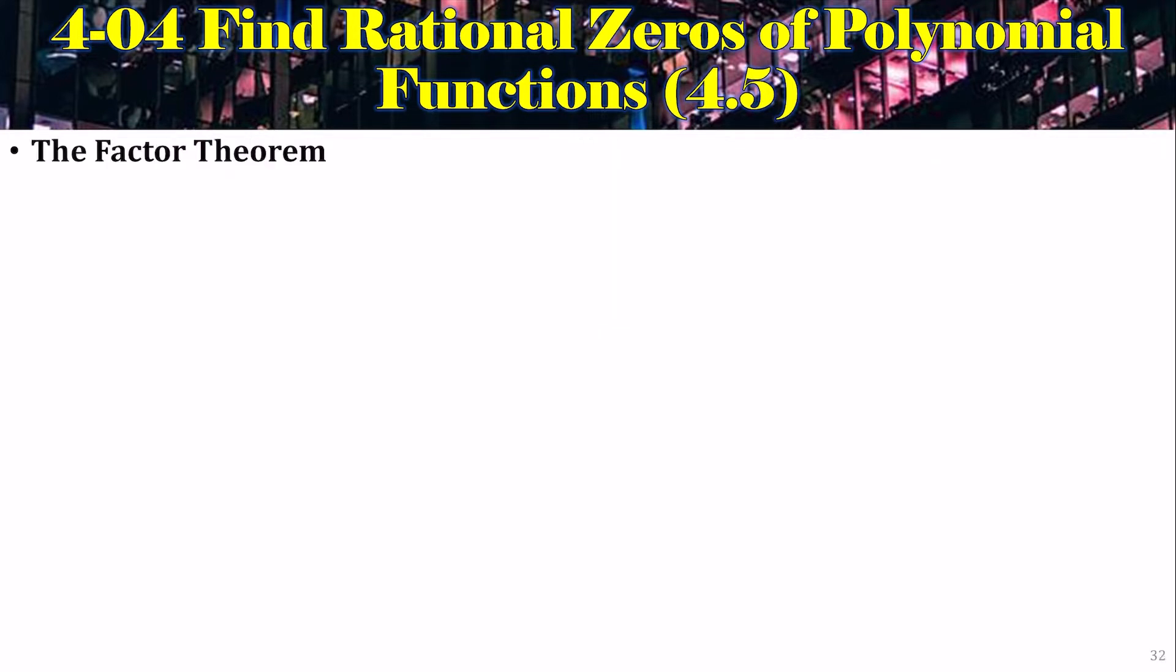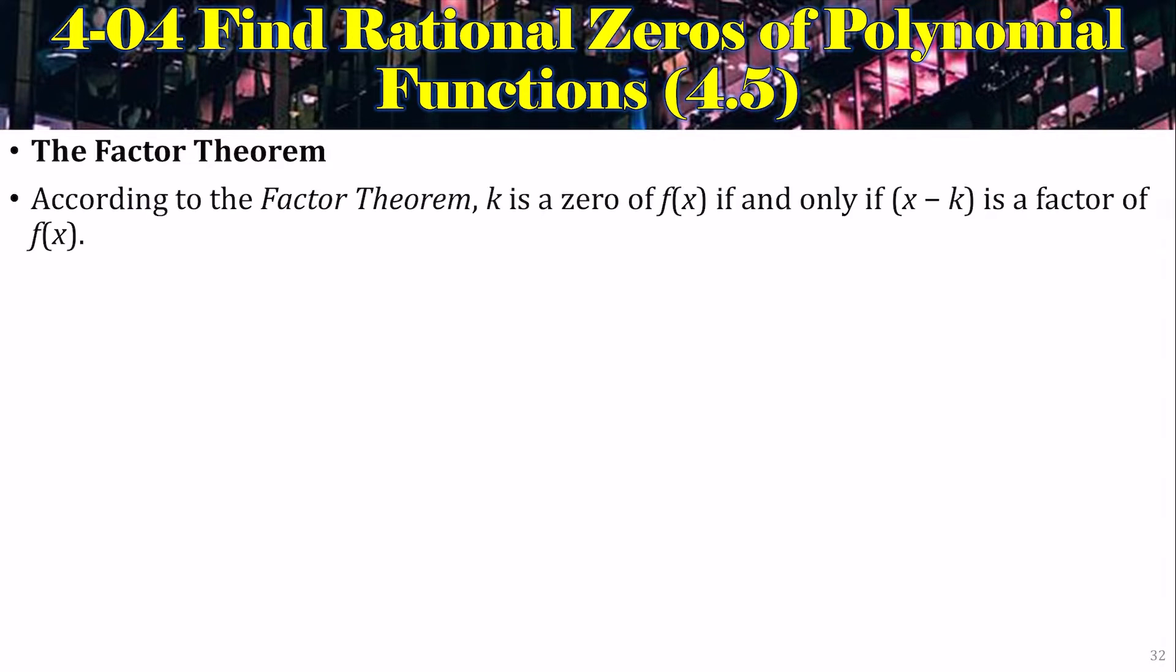We also get the factor theorem, which is kind of just the definition of a factor. It says k is a 0 of f of x, if and only if, x minus k is a factor of f of x. So we're saying if the remainder is 0, then it's a factor. And k is a 0. What's a 0? A 0 is the value of x that makes your function equal 0. So k is a 0. It makes it equal 0 if the remainder is 0.